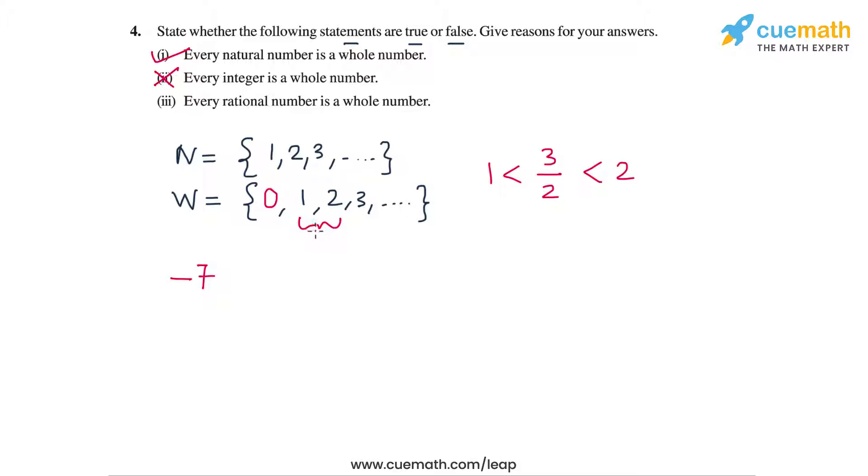So clearly not every rational number is a whole number, but every whole number is surely a rational number. So this statement, every rational number is a whole number, is actually false. So the first statement is true and the remaining two statements are false in question 4.